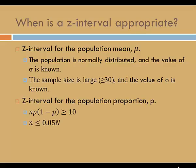A z-interval is also used to estimate the population proportion, p, when the following conditions are met: n times p times 1 minus p is at least 10, and the sample size is no more than 5% of the population.